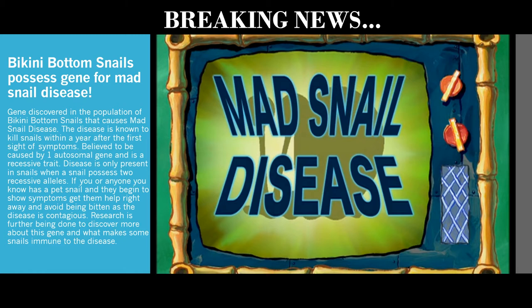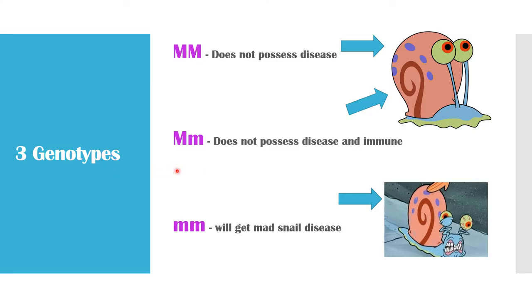They have decided that it is due to one gene and it is an autosomal gene. There are three genotypes that the snails in Bikini Bottom can possess. They can have autosomal dominant, which does not possess the disease. They can have heterozygous, which does not possess the disease and is medium. Or they can have recessive homozygous, which has the cell disease and will die within a year.